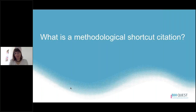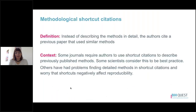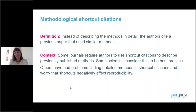Let's start with option one: the methodological citation shortcut. Instead of describing methods in detail, the authors cite a previous paper that used similar methods — you might see language like 'we did this method as previously described,' followed by a citation. Some journals actually require authors to use shortcut citations to describe previously published methods, and there are some scientists who consider this to be best practice. However, there are others who've had difficulty finding detailed methods when they went back to those cited papers, and they worry that shortcut citations negatively affect reproducibility.